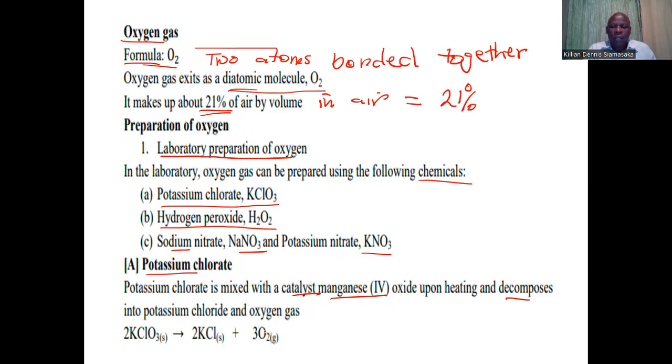The balanced equation as indicated here for the decomposition of potassium chlorate produces potassium chloride, which is a solid, and then oxygen, which is a gas. If you balance it, you have to put two here and then two here.